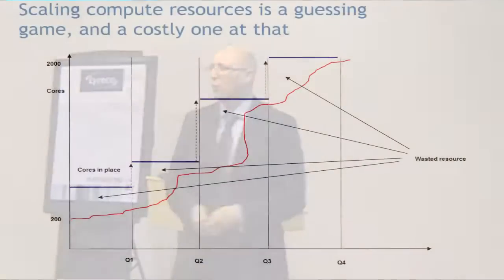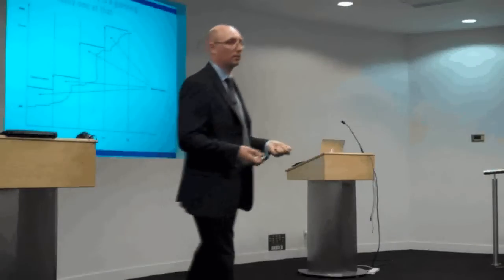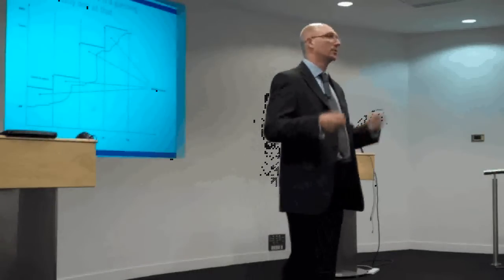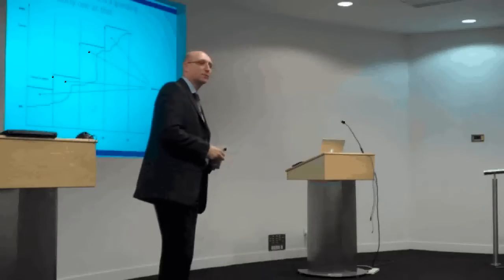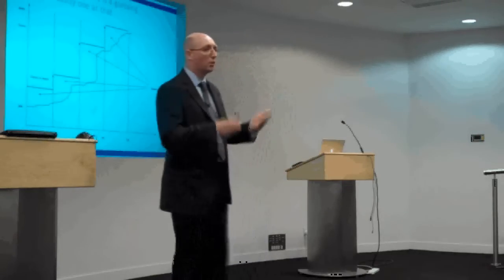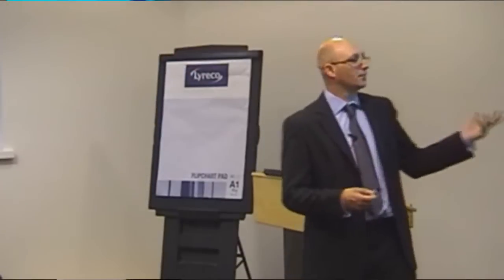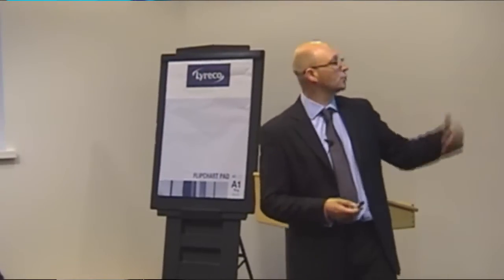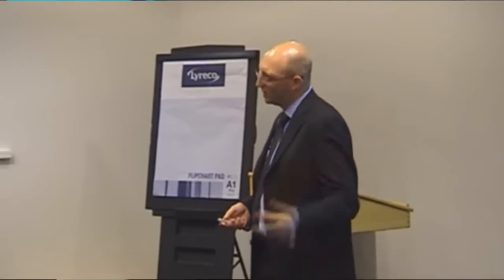One of the reasons it's costly is that we have to overestimate capacity. This blue line indicates the spare capacity we keep in place just in case we need it. The reason we do that is because it takes six to eight weeks just to get more kit delivered — someone has to drive up in a van, unbox everything. If you phone the environment team and ask for a new development server, they'll say 'that'll be three months.'